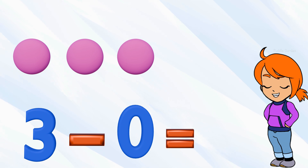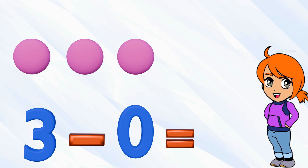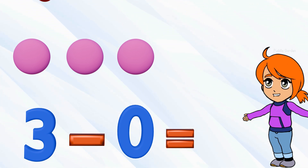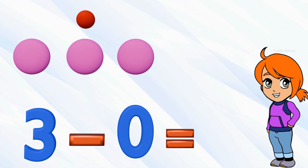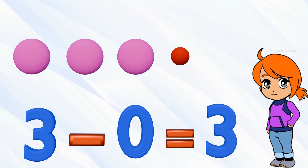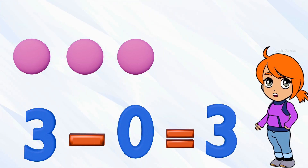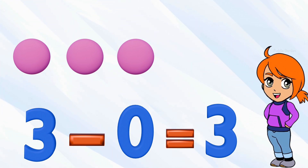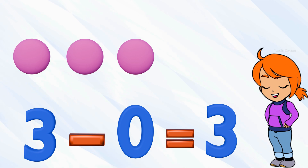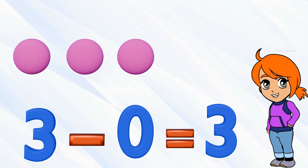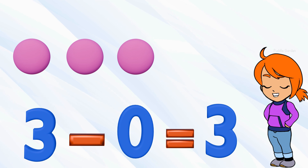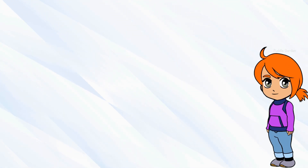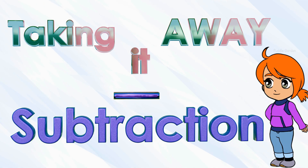This one is a tricky one: three take away zero. But what does zero mean? If we have three and we take away zero, that means we're taking away nothing, because zero represents nothing. If I have three candies and I took away zero of them, that means I still have three left. So zero means nothing — remember, it represents nothing.